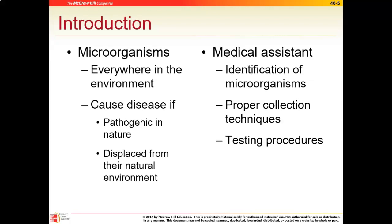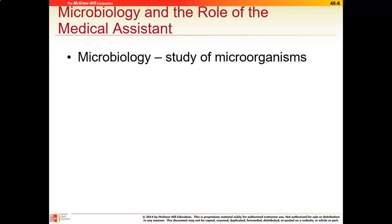E. coli is a good example. It is part of our normal intestinal flora and is actually beneficial because it produces vitamin B and especially vitamin K, which we use for blood clotting. However, if E. coli is excreted with feces and water or food becomes contaminated, then someone ingests it, it can become a pathogenic bacteria. Medical assistants' roles include identifying microorganisms, proper collection techniques, testing procedures like rapid streps, and quality control.